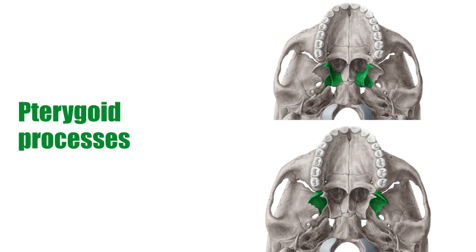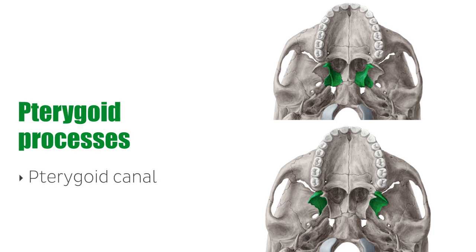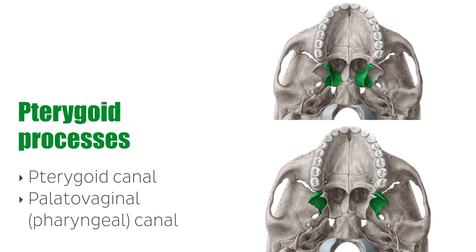The pterygoid processes are extensions of the basal surface of the sphenoid body. The processes contain two canals: the pterygoid canal, housing the major petrosal nerve, deep petrosal nerve, and vessels of the pterygoid canal; and the palatovaginal, or pharyngeal, canal, which holds the pharyngeal nerve. A hamulus extends bilaterally from each medial pterygoid plate.